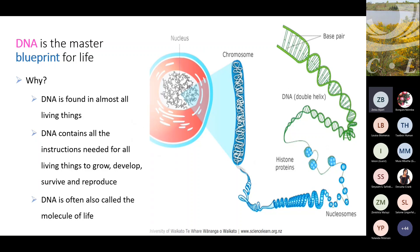DNA is found in almost all living things and it contains all the instructions needed for a living thing to grow and develop. This information is in each and every cell - the same information in every cell. It's like a recipe book. If you want to bake a cake, you take your recipe book and you know what to do. So your nucleus contains a million recipes for what you need this plant to do, or to grow, or to look like. It's also often called the molecule of life.